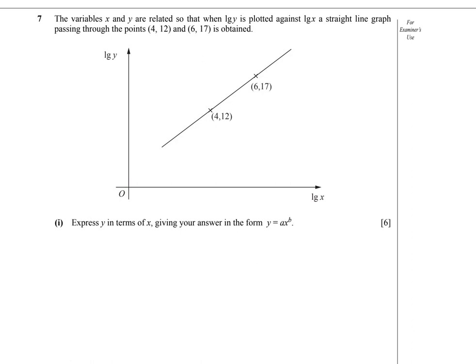Question 7. This question is from converting the curve into linear form. A curve has been converted to a straight line by changing the y-axis into log y and by changing the x-axis into log x. That straight line passes through the points (4, 12) and (6, 17).